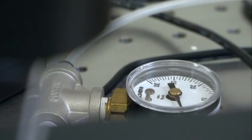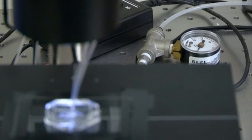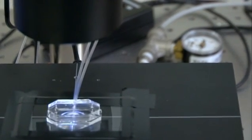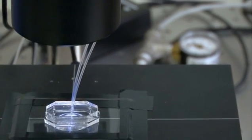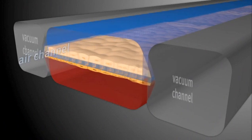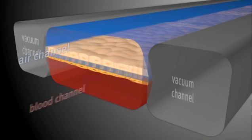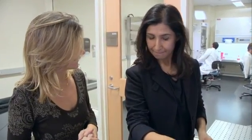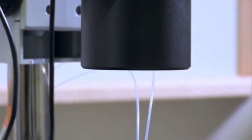A vacuum pump recreates the way lungs physically expand and contract during breathing. Air is also passed over the cells too. The idea is to mimic the lung as closely as possible. That's the lung on a chip breathing. This is a living, breathing, lung on a chip.